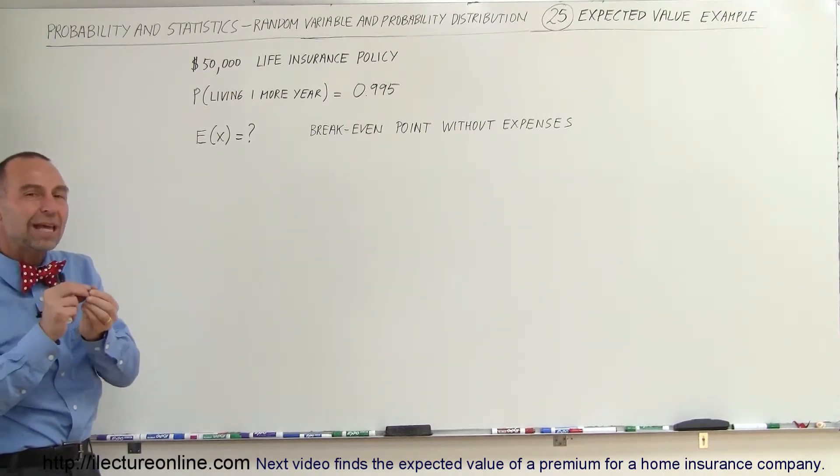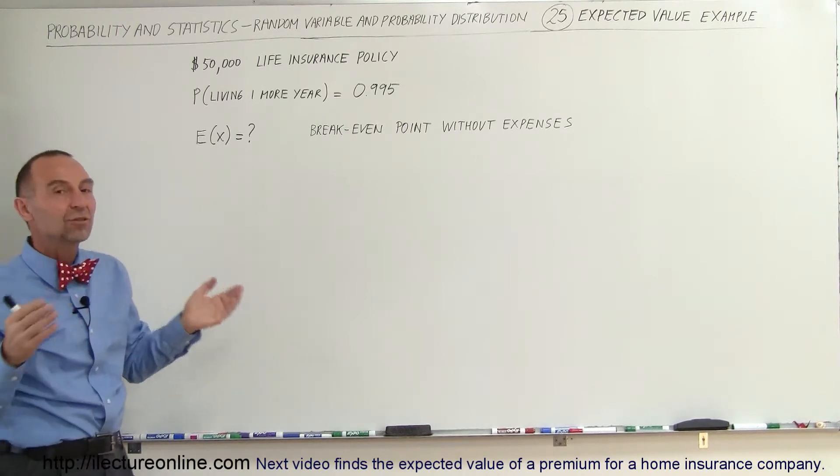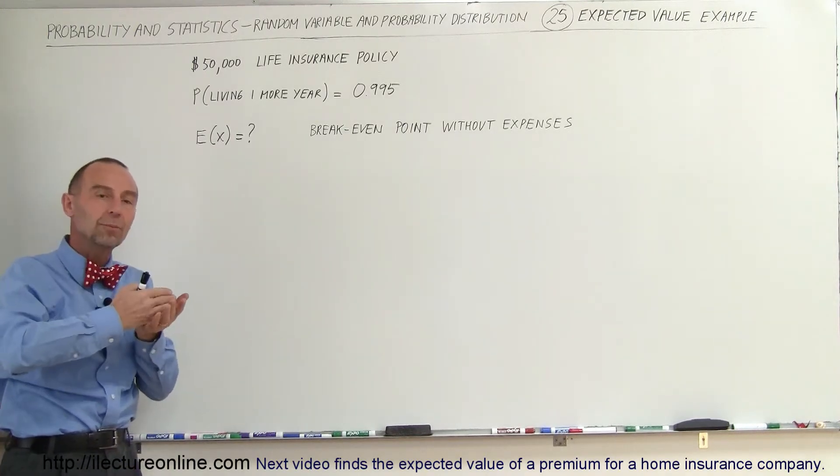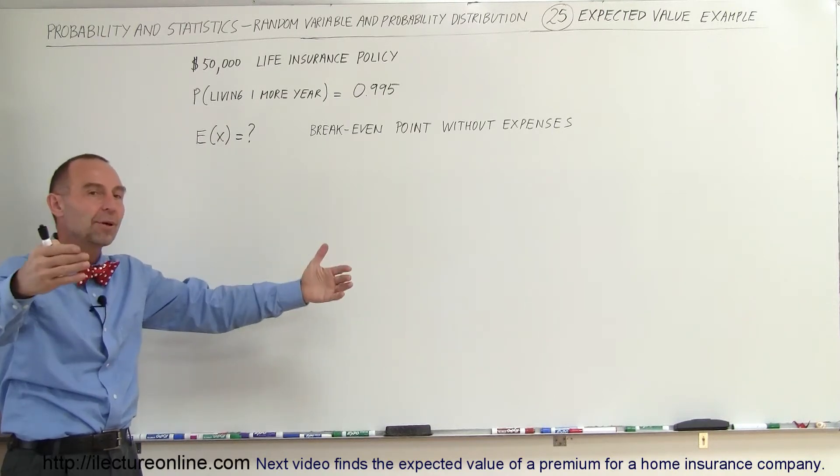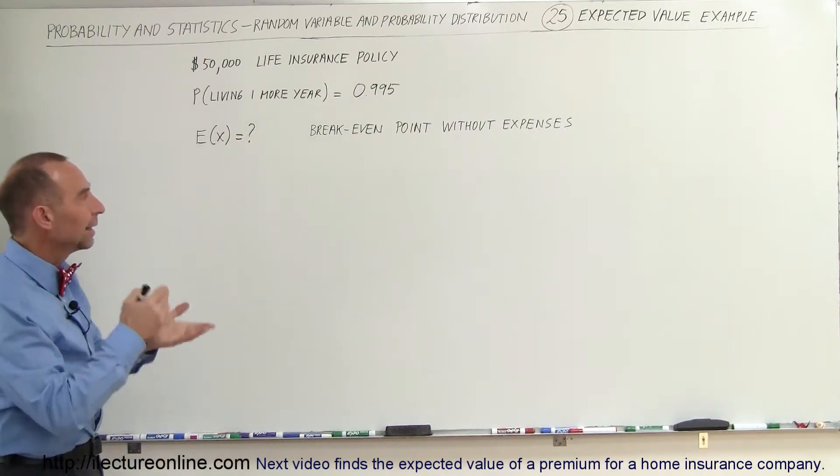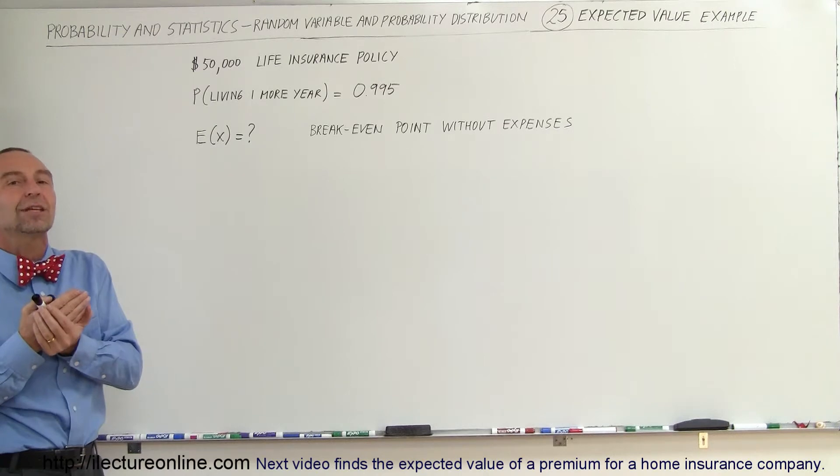In other words, that means the break-even point without any expenses. So if they take in all the premium money and they give all the premium money away to people who die, then they should have zero money left over at the end of the year.